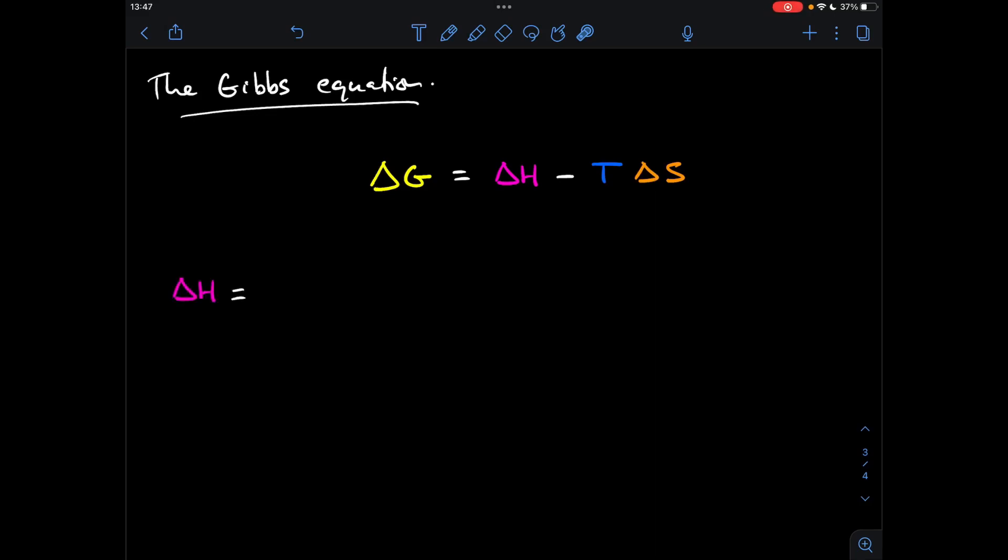OK, so delta H is probably the easiest one, because all we've got to do is move one thing out of the way. So you can see, at the moment, we've got delta H and minus T delta S on the same side of the equation, whereas we just want delta H by itself. So we need to take all of this over to the other side. So what's it doing at the moment? It's minus T delta S. So when we take it over to the other side, it just becomes plus T delta S.